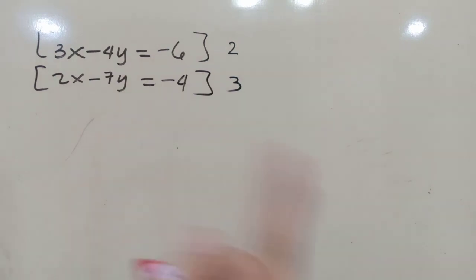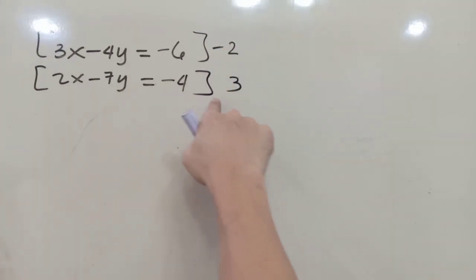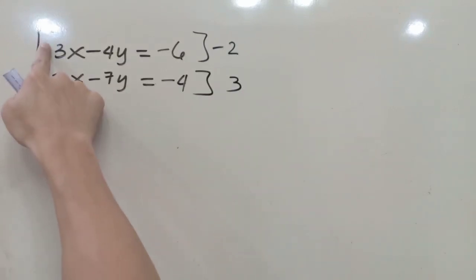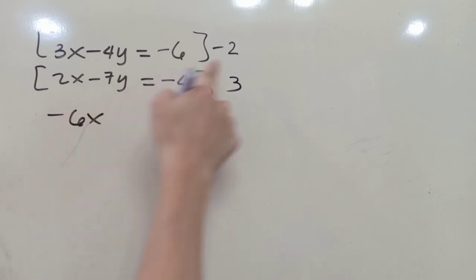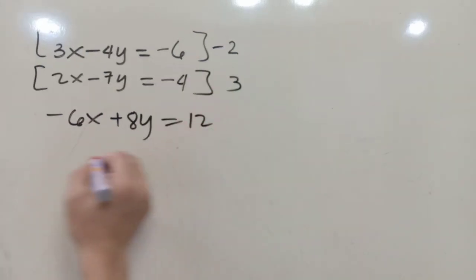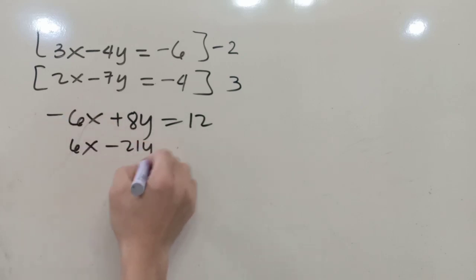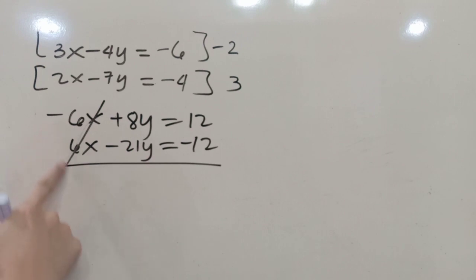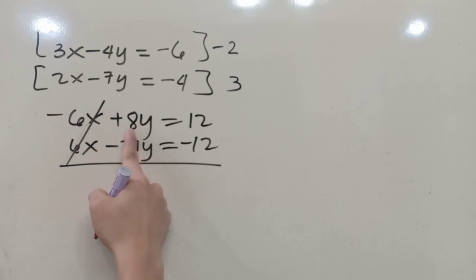Since the signs of x are both positive, if we multiply and add, 6x plus 6x equals 12x — we cannot cancel it to zero. So one of the multipliers must be negative. I'll use negative 2 as the multiplier for the first equation. So negative 2 times 3x gives negative 6x, and positive 3 times 2x gives positive 6x, which then cancel to zero.